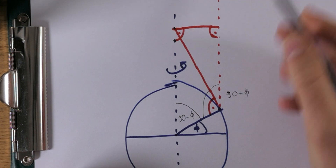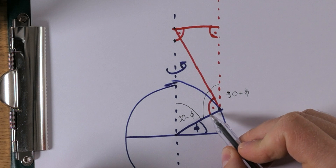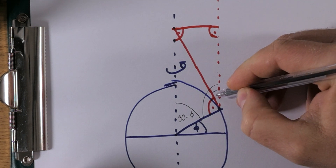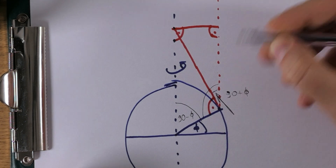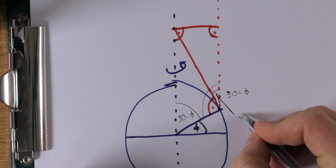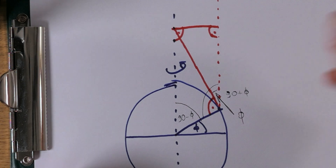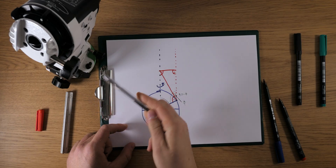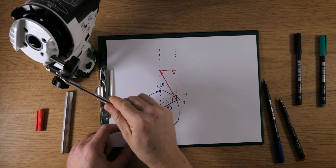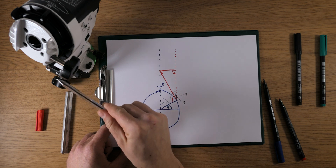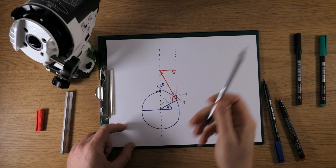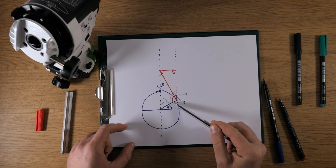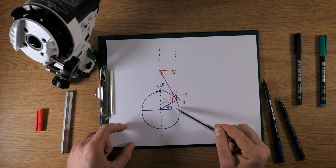But look at this: right here we have a right angle of 90 degrees. So this tiny remaining angle is also phi. And this is the elevation angle we have to set on our wedge, on our star tracker. That's why this angle is exactly equal to our latitude.